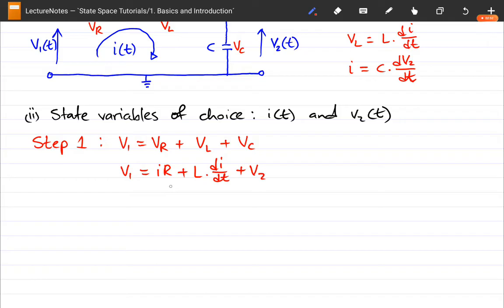Okay, so now we said I of T and V2 of T are going to be our state variables. You'll notice right now that this circuit, this differential equation already has our state variables in line. So we are pretty much set up to solve our problem. We can now move on to the next part, which is going to be step two.